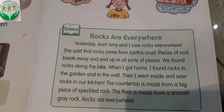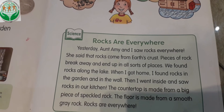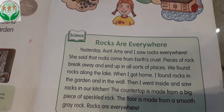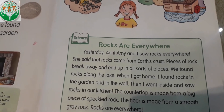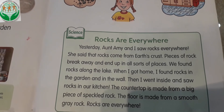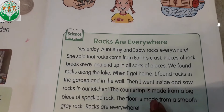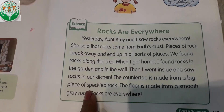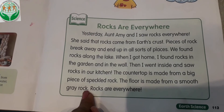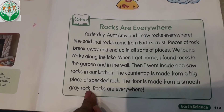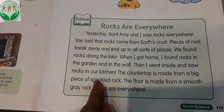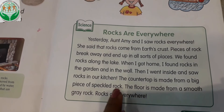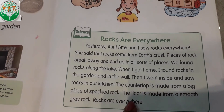जो countertop था kitchen का वो एक बहुत बड़े speckled rock के piece से बना हुआ था। Speckled rock means spotted or colorful — जिसमें किसी तरह का pattern बना हुआ हो उस type के stone को speckled rock बोलते है। The floor is made from a smooth grey rock — जो घर का floor था वो एक smooth grey color की rock से बना हुआ था। Rocks are everywhere — rocks हर जगह पाई जाती है।